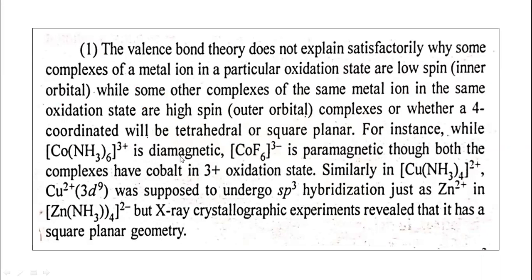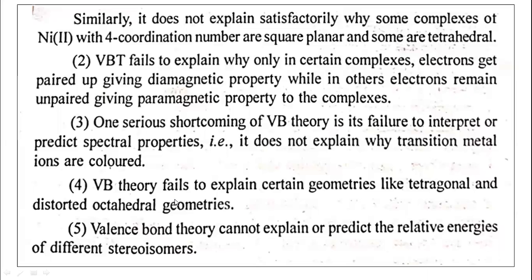Co(NH₃)₆³⁺ is diamagnetic while CoF₆³⁻ is paramagnetic, yet both complexes have cobalt in the 3+ oxidation state. Another example: Cu(NH₃)₄²⁺ — copper(II) was supposed to undergo SP³ hybridization just as Zn²⁺ in Zn(NH₃)₄²⁺, but X-ray crystallographic experiments show that it has square planar geometry. Valence bond theory does not give this explanation.